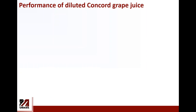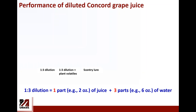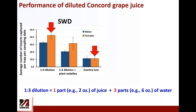The second thing I'd like to discuss is the performance of diluted Concord grape juice as a monitoring bait. We have been trying to find materials that are cheaper and easy to get. Starting in 2018, we tested the effectiveness of different fruit juices — blueberry, grape, apple, etc. We found that Concord grape juice was among the most effective. We then tested different dilutions and found that one part juice to three parts water becomes a very attractive material for spotted wing drosophila. I was comparing traps baited with the 1-to-3 dilution against grape juice with plant volatiles added, and against Sentry Lure, a commercial lure.